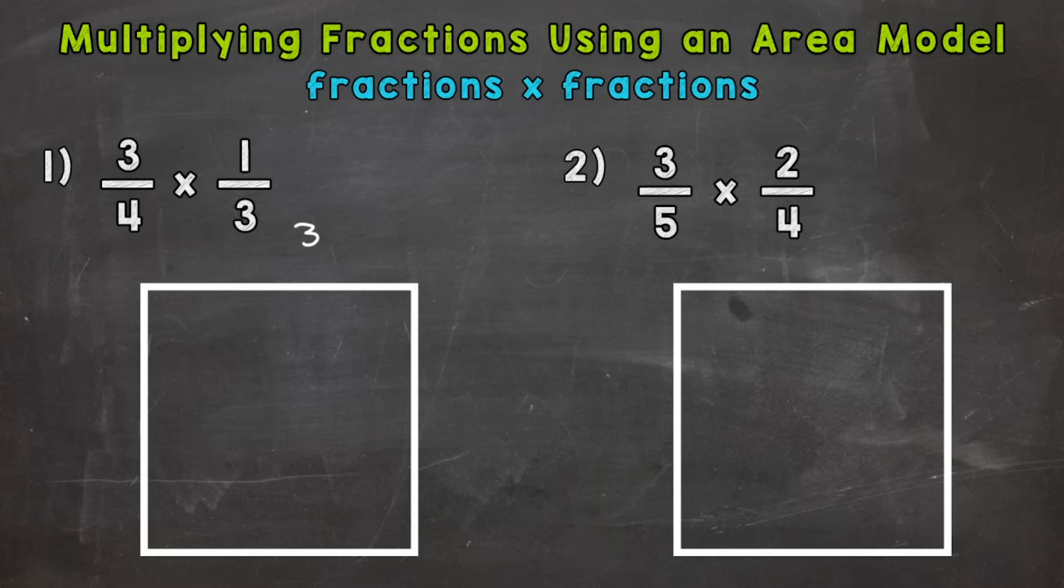So let's write it along the top here. And we're going to cut our big square into fourths, and we're going to go vertical, so up and down. And I'm going to try my best to create straight lines and cut into equal sections to represent fourths. It doesn't have to be perfect.